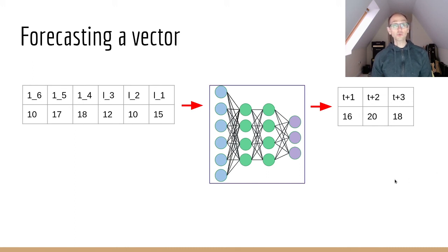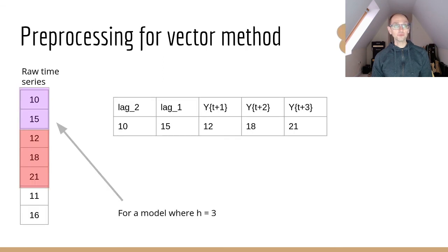This changes the way we build our training data. For pre-processing for the vector method, we need multiple targets within our training data. So we have our x data, our 10 and 15, our first two lags, and then we have the next three values included in our table. These are the target variables for our neural network model, and these are our features for our model. If we were looking at h equals two, we would only have two of these in the model. So now we're going to move over to have a look at the notebook.